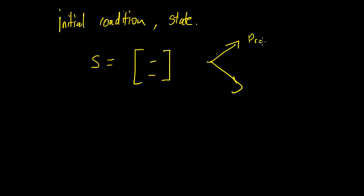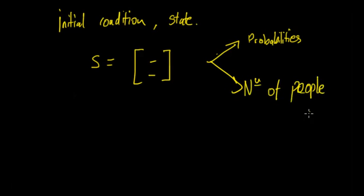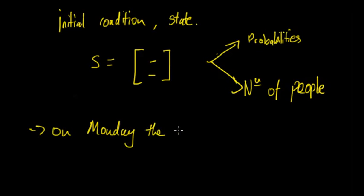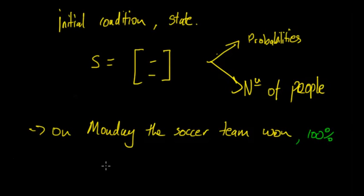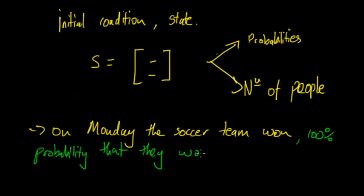With the probabilities, if they say on Monday the soccer team won, then there's a 100% probability that they won, because it was given in the question that they have won. A hundred percent probability equals one, and so the chance of them losing is zero.